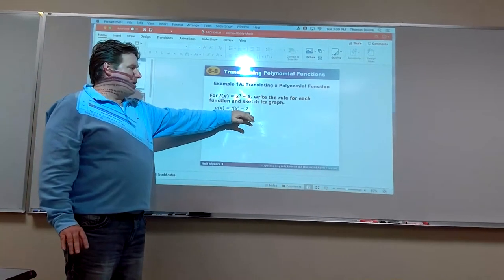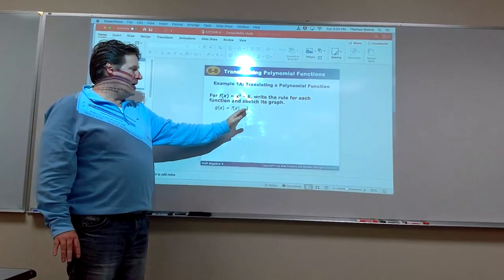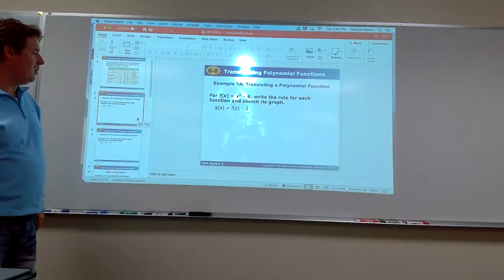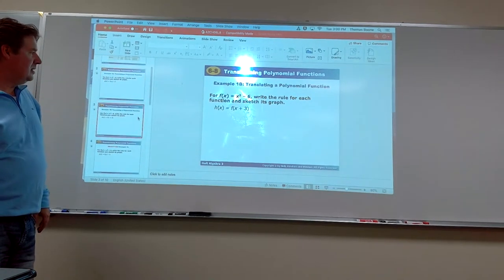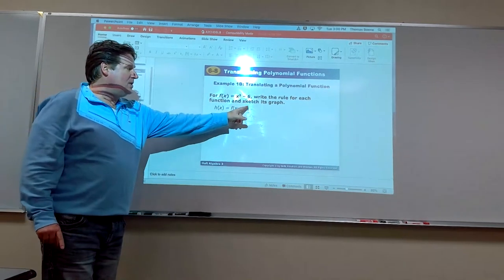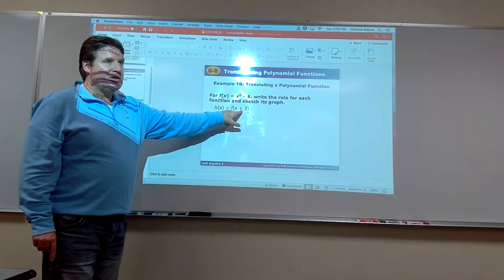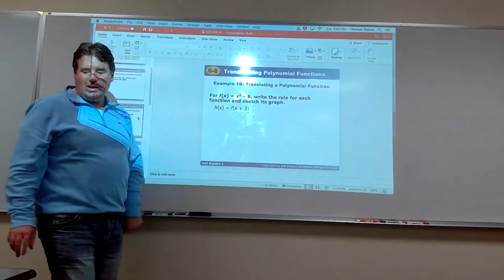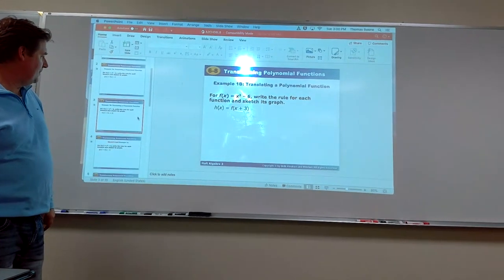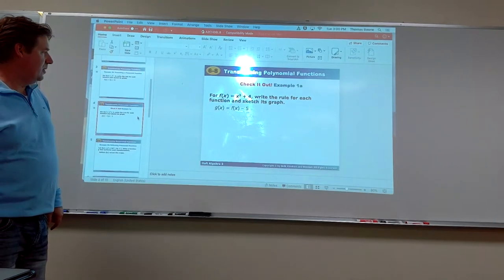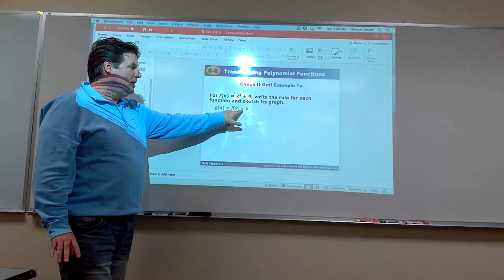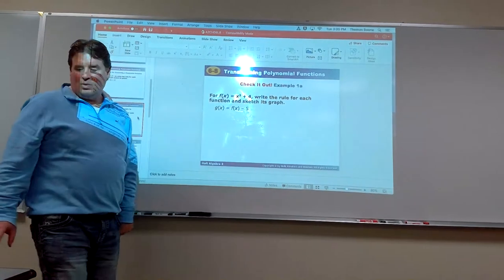What is f(x) - 2 going to do? It's outside the parentheses, so that moves it down 2. And here, we're inside the parentheses with f(x + 3), which means it's horizontal. Plus 3 moves it left 3 - remember, horizontals are backwards. Another example: f(x) - 5, again outside the parentheses, moves it down 5.